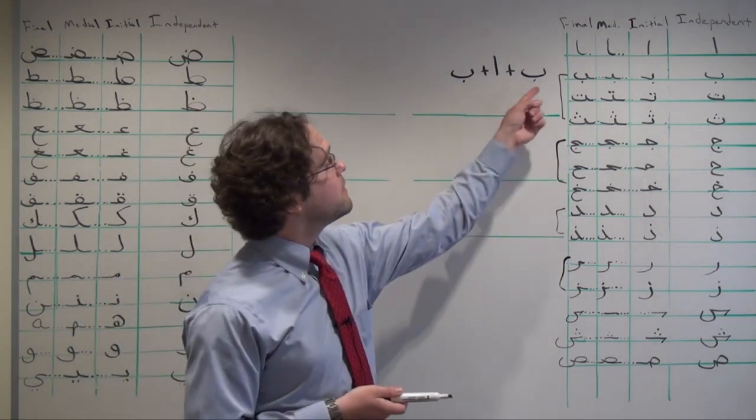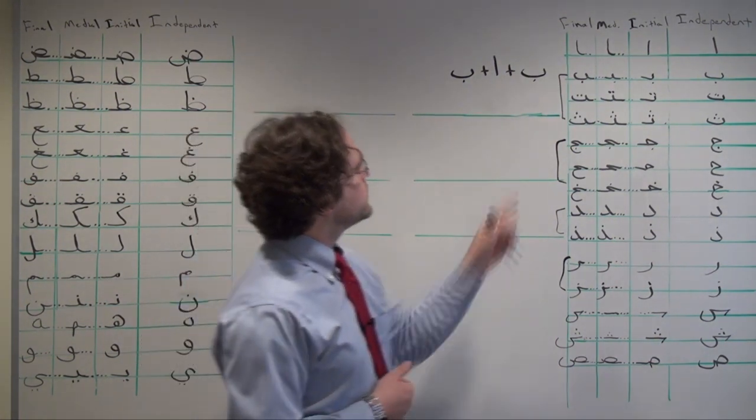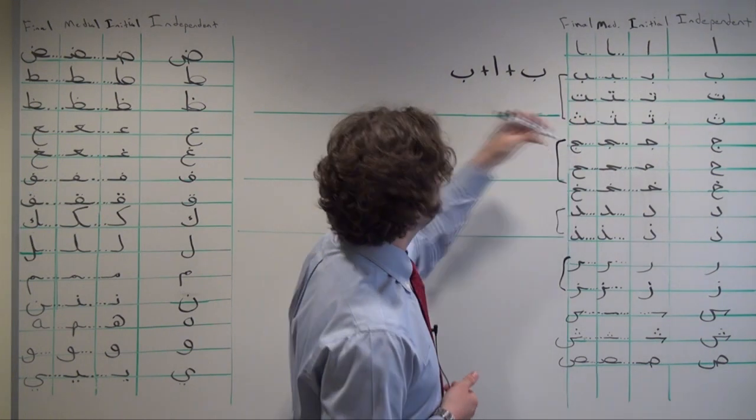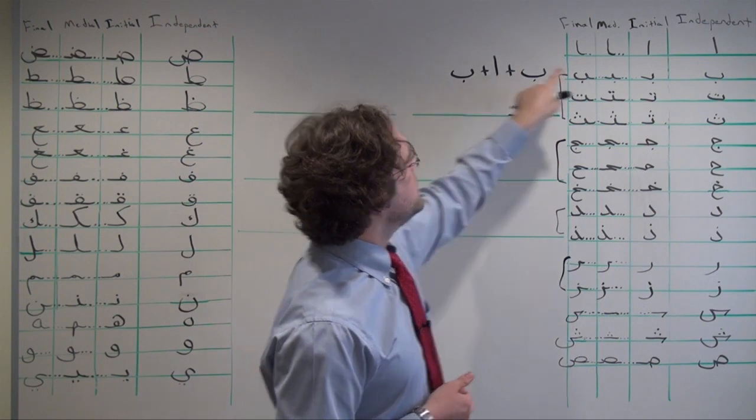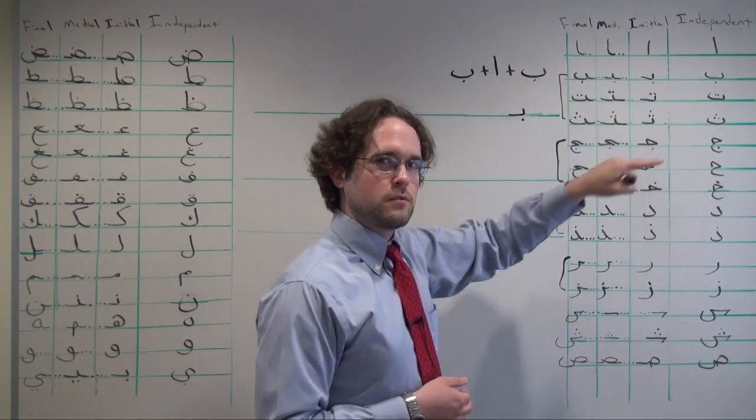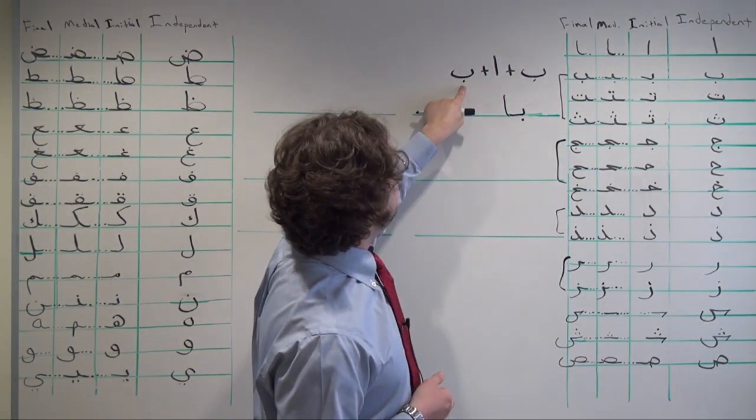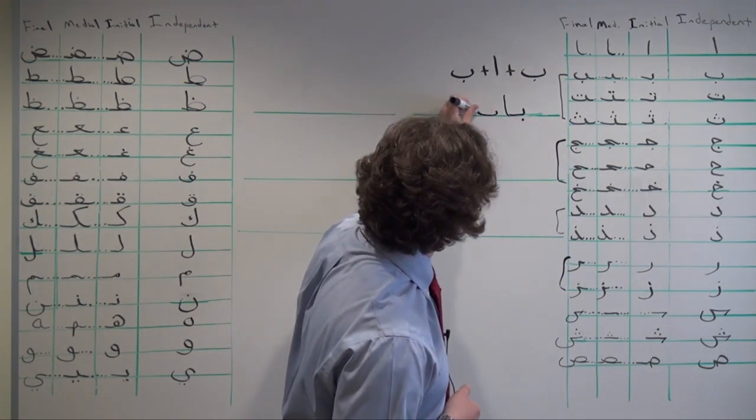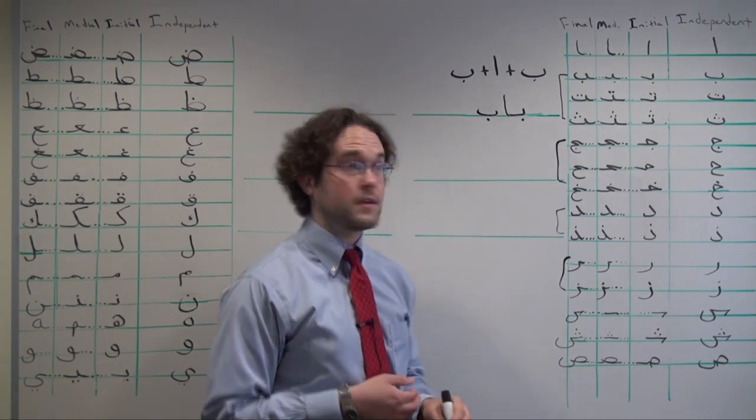Here we have ب, ألف, ب, and we're going to connect them to form one word. We're going to take ب and start with the initial form. Notice that it follows into the next letter. And here we have ألف, so we're going to use the medial form, and we notice that it doesn't connect with the letter that follows it. We're going to have to start over from the beginning. And here we have a final ب, but since it can't connect with the ألف, we're going to use its stand-alone form, or the word باب, which means door in Arabic.